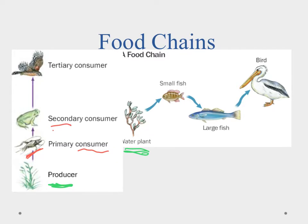Then we move up to a secondary consumer — the frog — which eats the grasshopper. Then we have our tertiary consumer, a bird of prey, which feeds on the frogs. We can see the same situation in an aquatic environment: seaweed is eaten by small fish (primary consumer), those small fish are eaten by larger fish, and that larger fish is eaten by a pelican, our tertiary consumer.